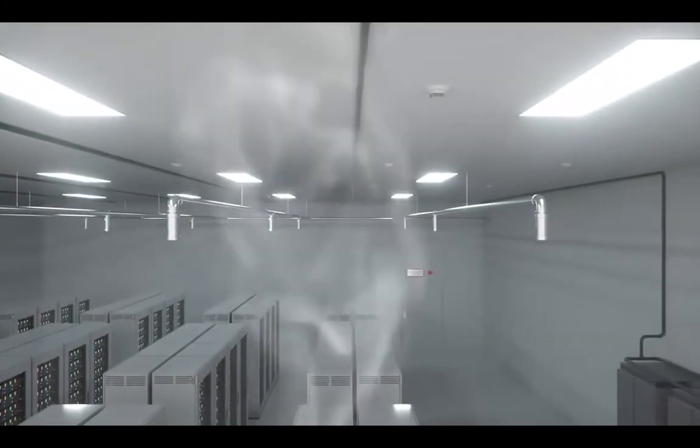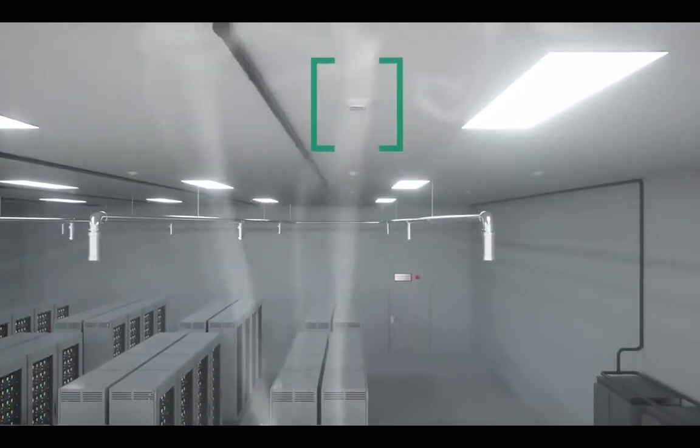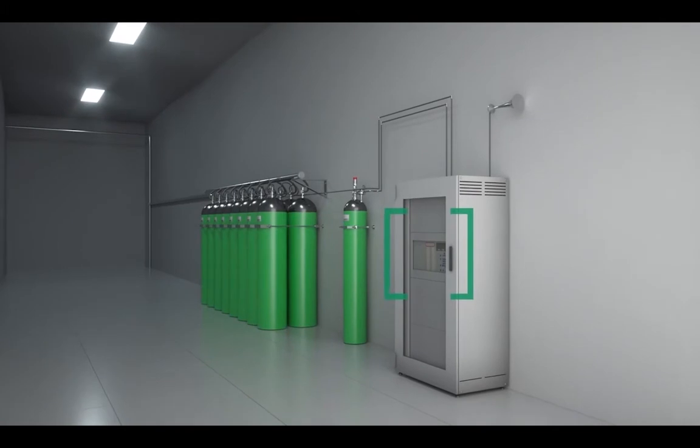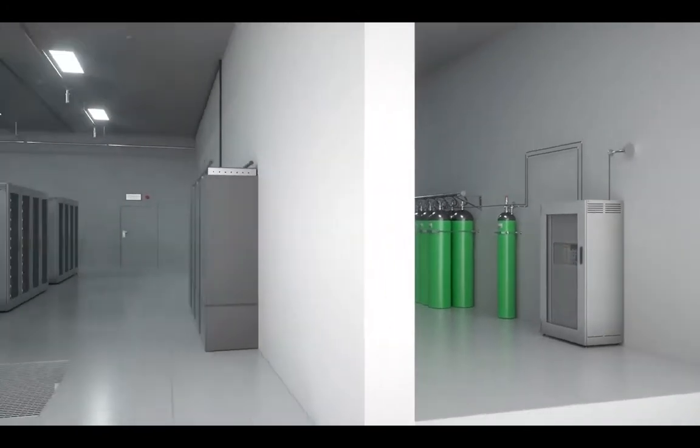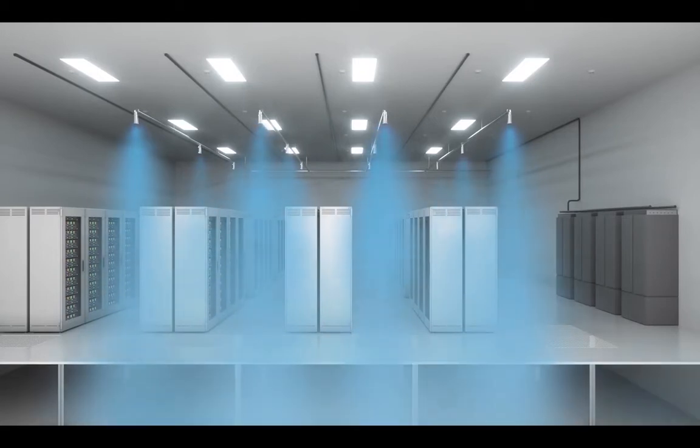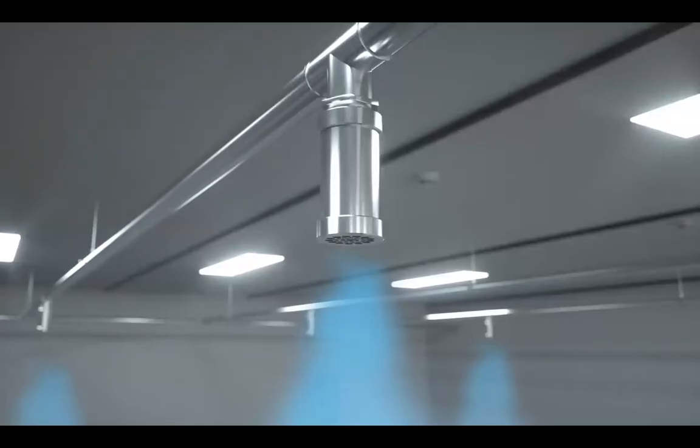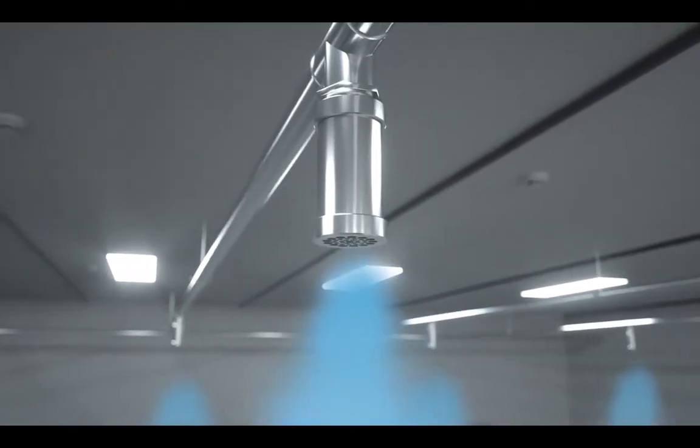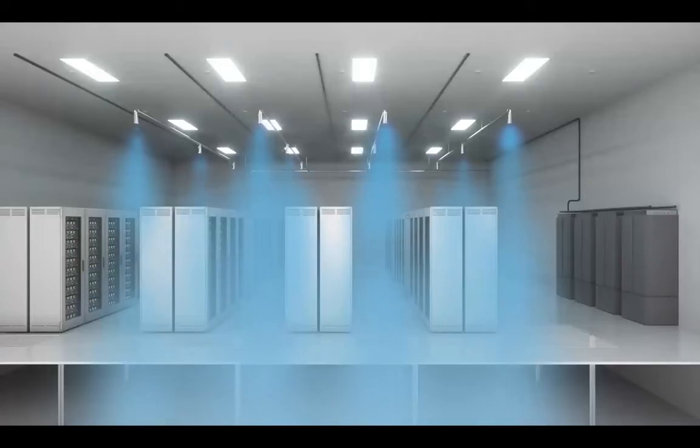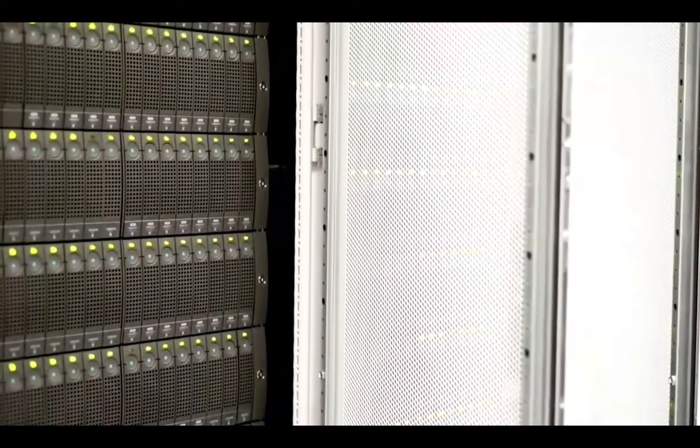If the smoke thickens, point-type smoke detectors trigger the fire alarm. The fire detection control panel actuates the automatic extinguishing system for the area in question. The extinguishing gas nitrogen displaces the oxygen and quickly and efficiently chokes the fire. As nitrogen is non-conducting, no short circuits or chemical reactions occur, and the hardware remains unaffected.